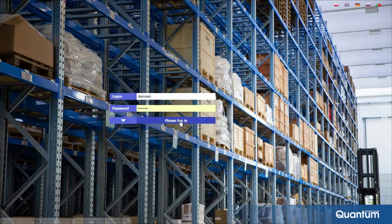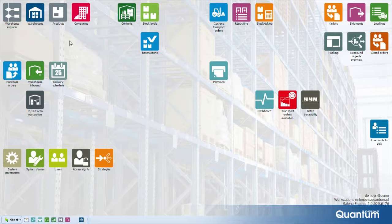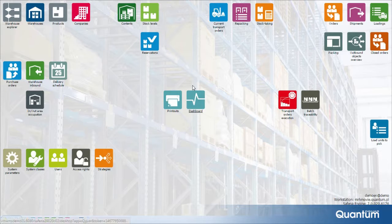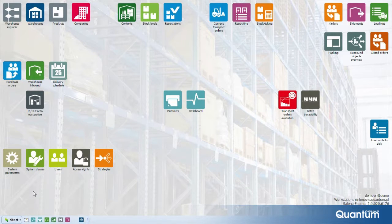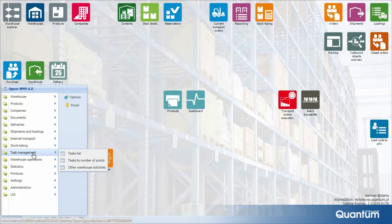Quoguar WMS is designed to be used in a web browser. Once the program is launched, the user sees a list of icons that are shortcuts to main system functions. As a standard, these icons are classified into several groups: master data, warehouse contents and stock level, inbound operations, outbound operations, and analyses and statistics. The user may also create and save a customary arrangement of icons on the wallpaper. A different classification and arrangement of functions is available in the main menu in the bottom left part of the screen.